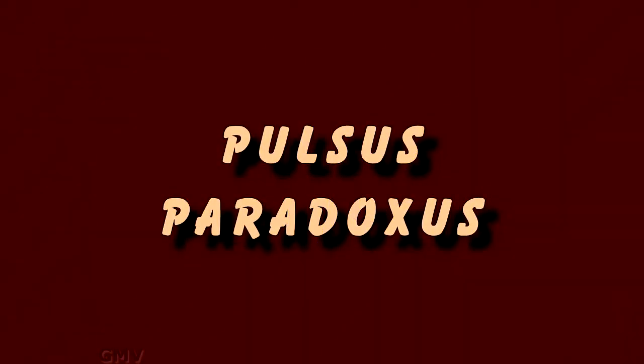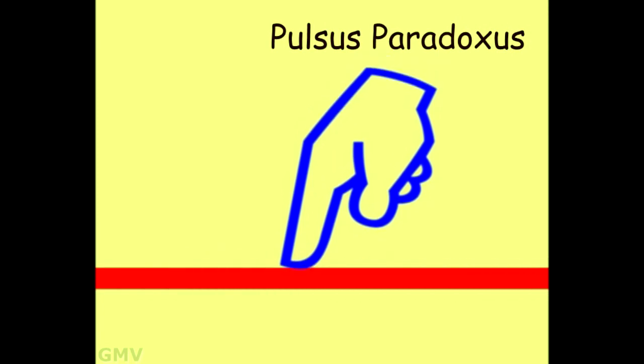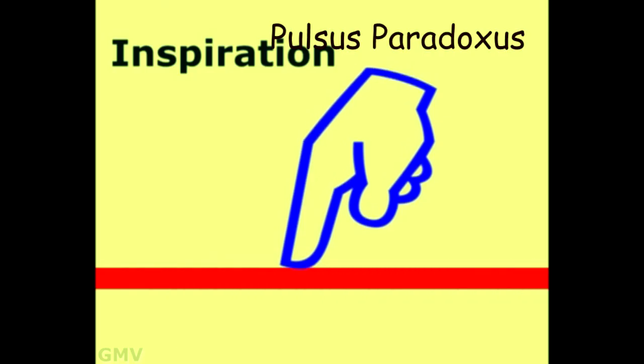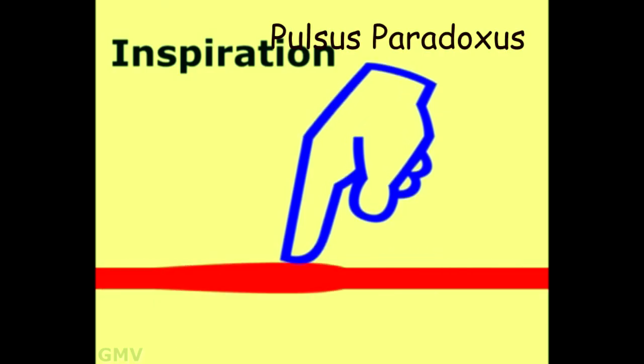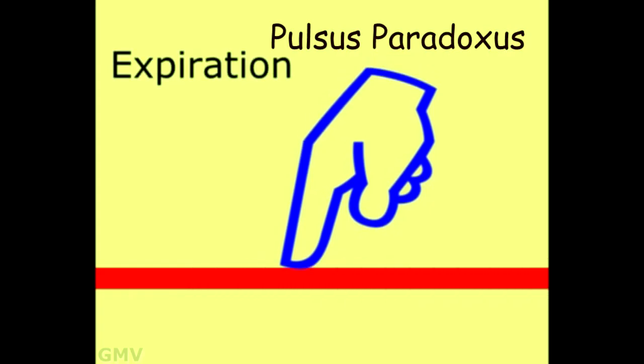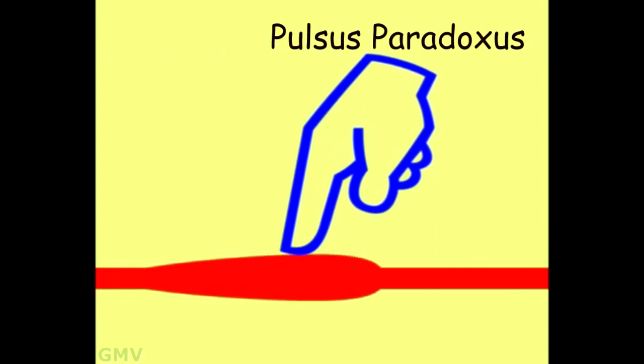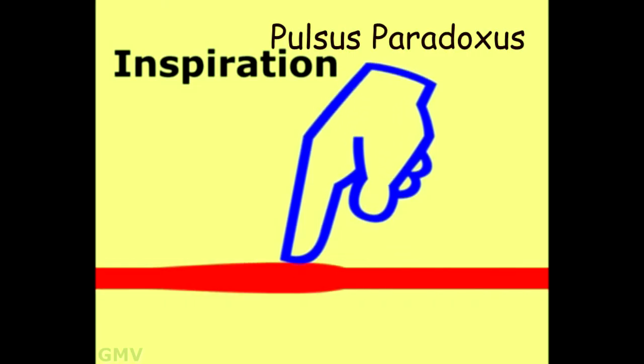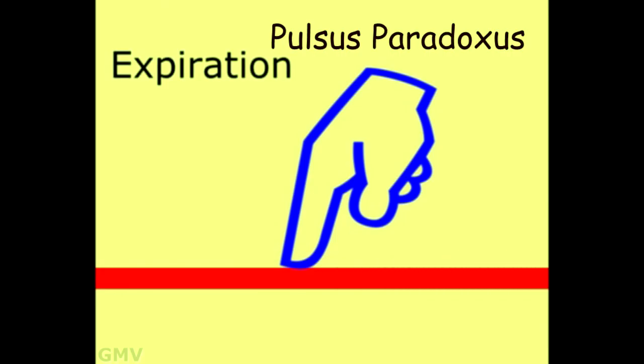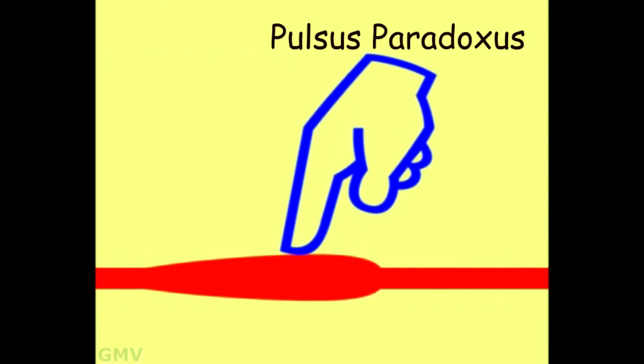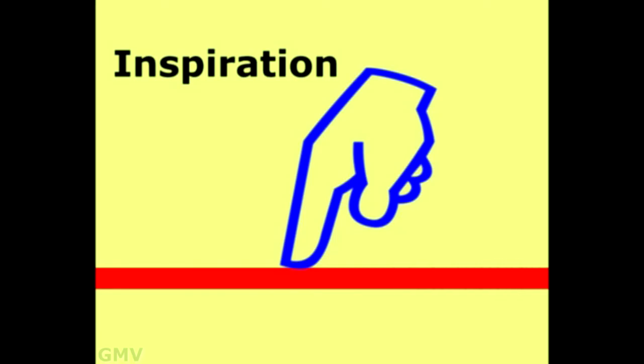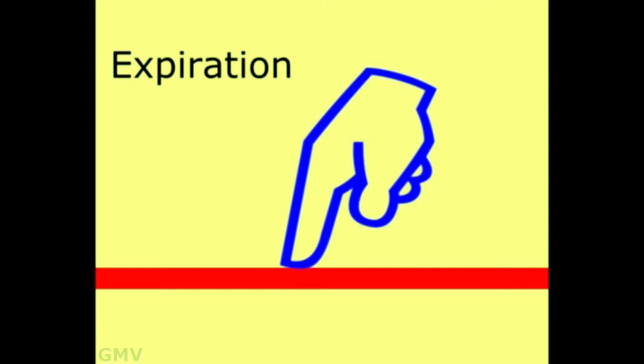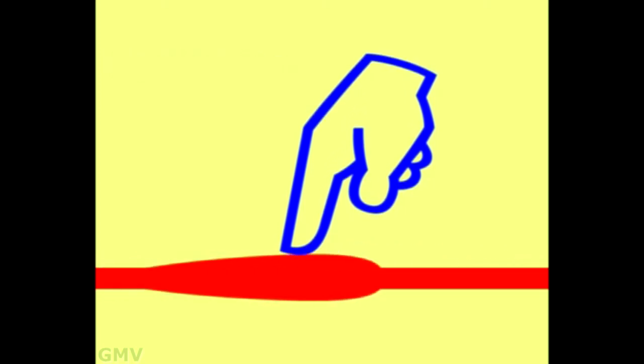Pulsus paradoxus. If the pulse volume significantly decreases during inspiration, it is termed as pulsus paradoxus. This is due to increased right ventricular volume during inspiration with bulging of interventricular septum into left ventricle causing reduction in its volume and cardiac output. Pulsus paradoxus is seen in cardiac tamponade, constrictive pericarditis and superior vena cava obstruction.